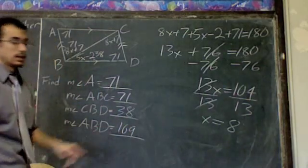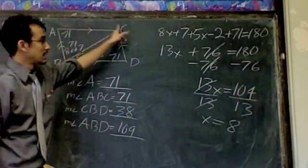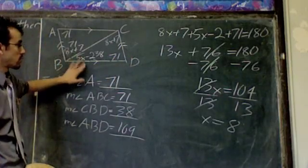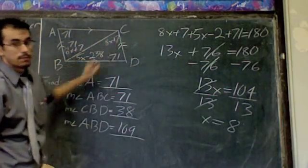So angle ABD is 109, which would be the same as ACD. If this whole angle is 109, then this whole angle is 109.